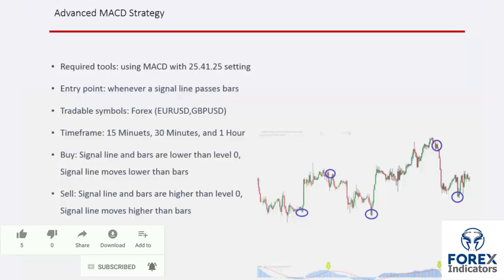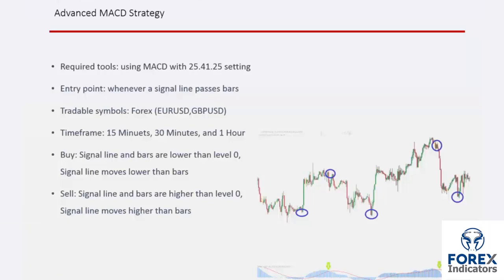Advanced MACD generates signals whenever the signal line crosses the bars towards the top or bottom. A trader can apply advanced MACD on all symbols with range markets, especially on EUR/USD and GBP/USD. A buy order can be placed when bars and signal lines are under level zero and the signal line moves under the bars.